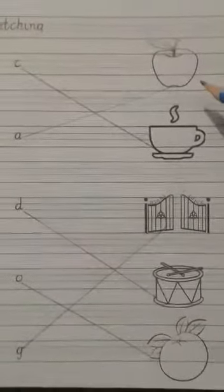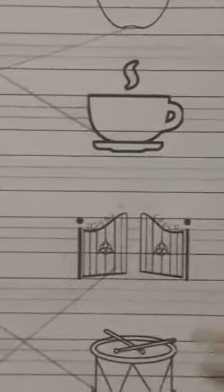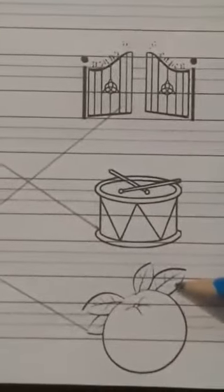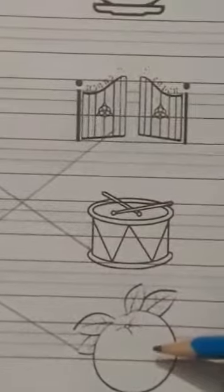Girls, use red and green color for apple. And use your favorite color for cup and gate. Use different colors in drum. And use orange and green color for orange. Okay, children.